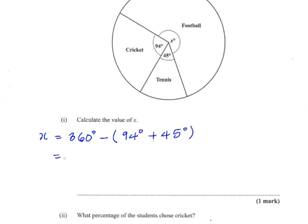So this is 360 minus 139. Therefore x would be equal to 221 degrees. So x, which is the sector angle for football, is equal to 221 degrees.